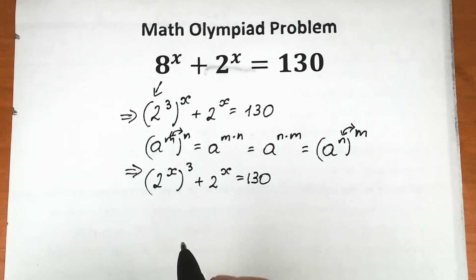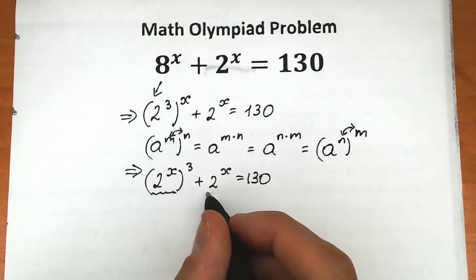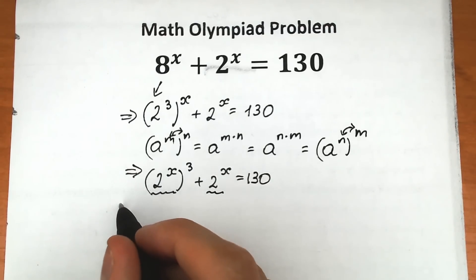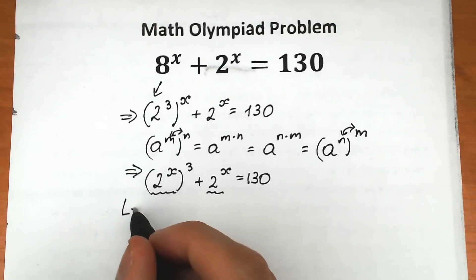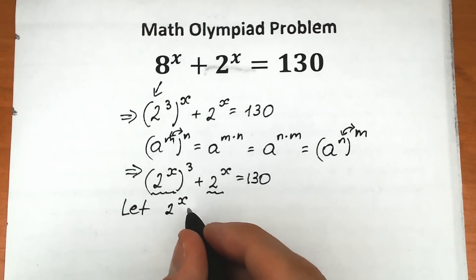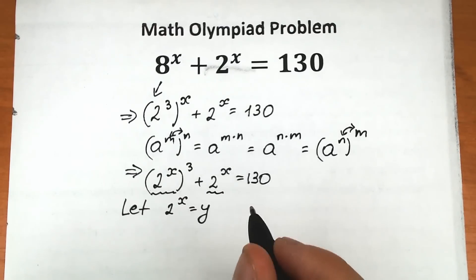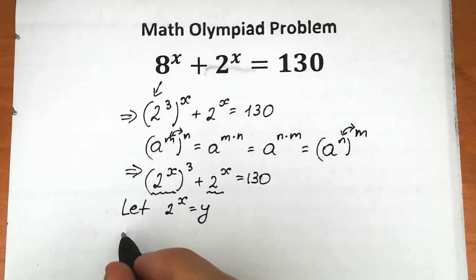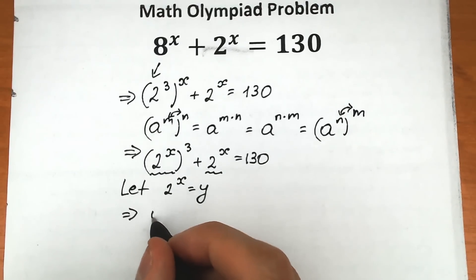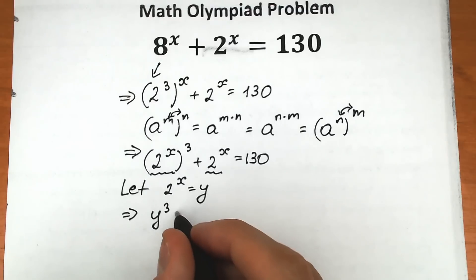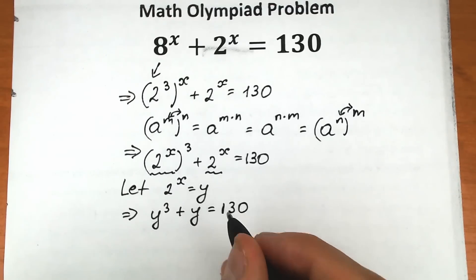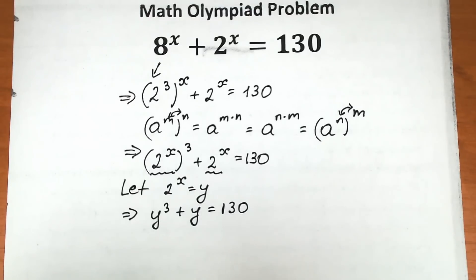What are we going to do next? We have 2 to the power x and 2 to the power x — we can easily work with substitution because it simplifies things a lot. So let 2 to the power x equal to y. As a result, we have the next equation: y cubed plus y equal to 130. This is our expression right now, and this is like a cubic equation.